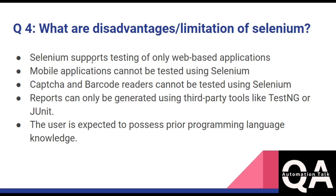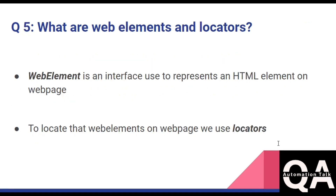The next question is: what are the disadvantages or limitations of Selenium? Selenium only supports web-based applications — you cannot automate mobile applications or captcha and barcodes using Selenium. Selenium does not have any built-in reporting tool, so you have to use TestNG or JUnit for reporting. Also, users should have programming language knowledge before getting started with Selenium.